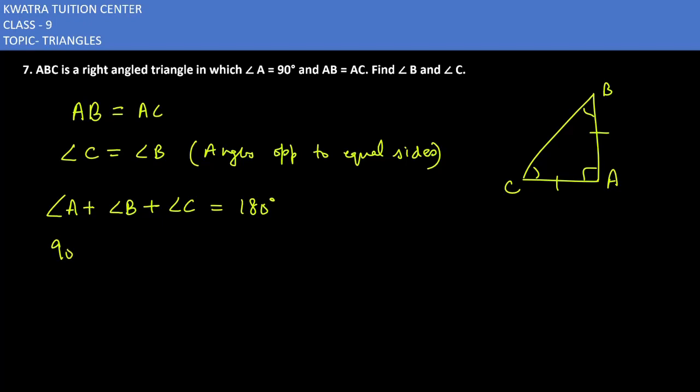And what angle A is what degree of measure? 90 degree. So I will substitute. Now what value you will get is twice of angle B is equal to 180 minus 90. Twice of angle B is equal to 90.